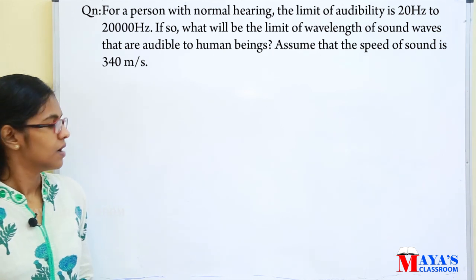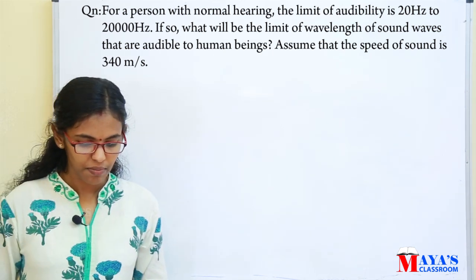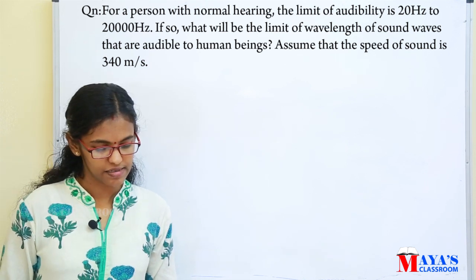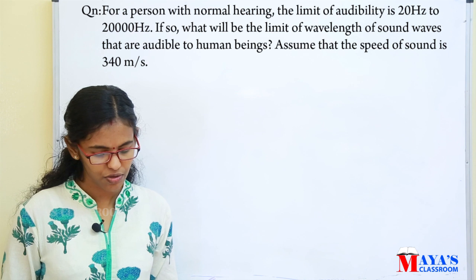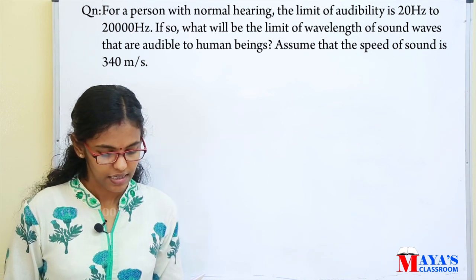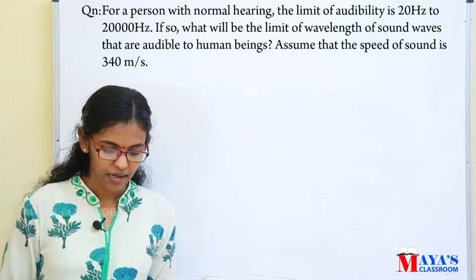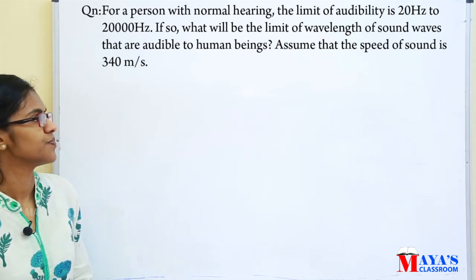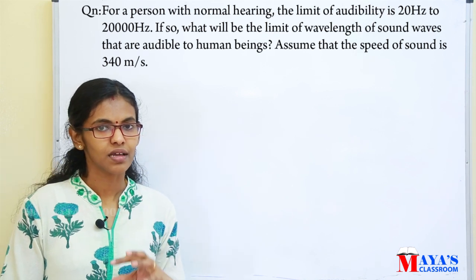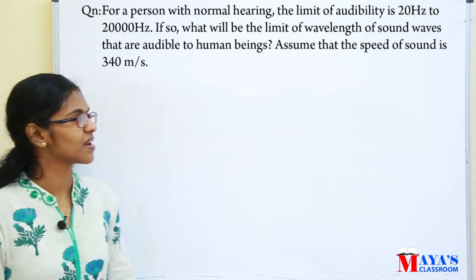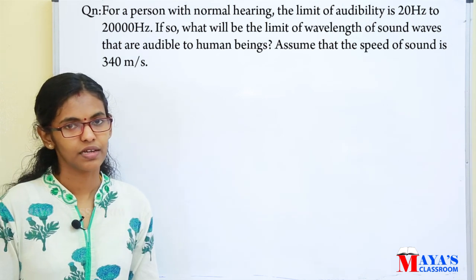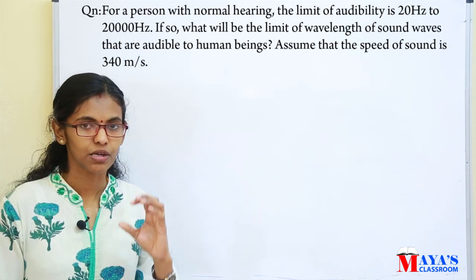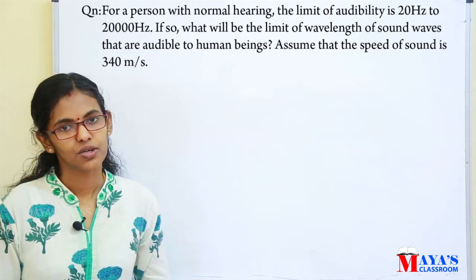Next question: for a person with normal hearing, the limit of audibility is 20 hertz to 20000 hertz. What will be the limit of wavelength of sound waves audible to human beings? Assume the speed of sound is 340 meters per second.